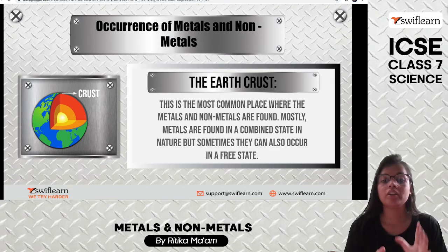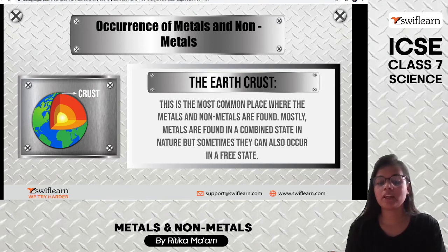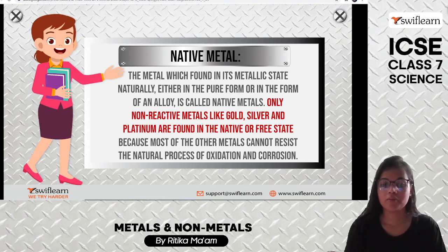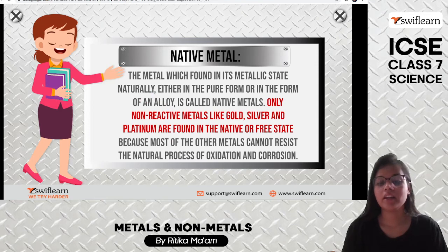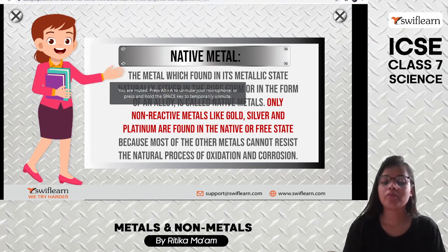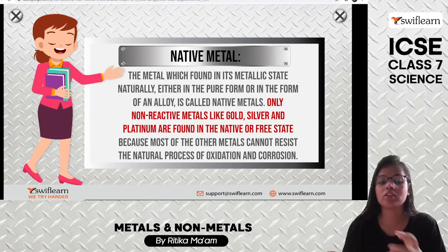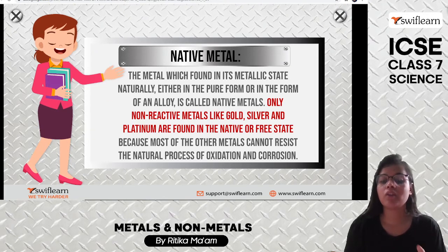Talking about the occurrence of metals and nonmetals: we find them mostly in the Earth's crust. Metals are found mostly in combined state, though sometimes they are also found in free state — like gold and silver. A native metal is one which is found in its metallic state naturally, either in pure form or as an alloy. Only non-reactive metals like gold, silver, and platinum are found in their native or free state, because other metals combine through oxidation or corrosion.